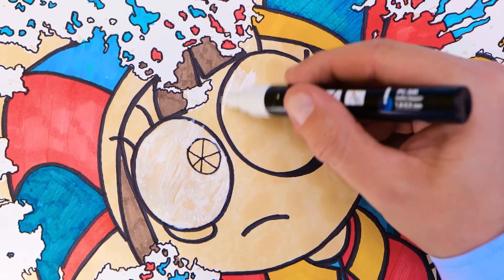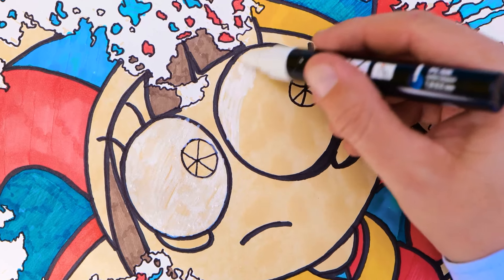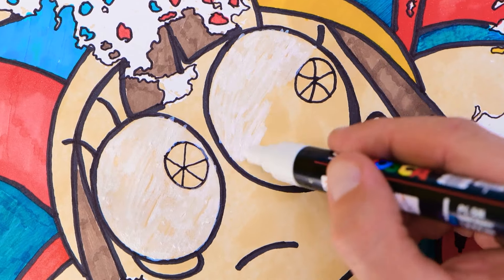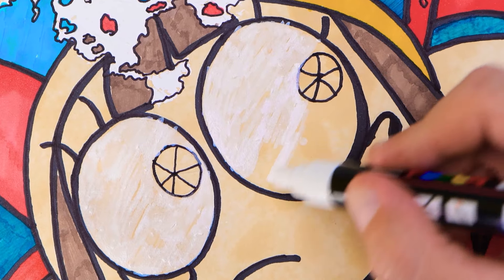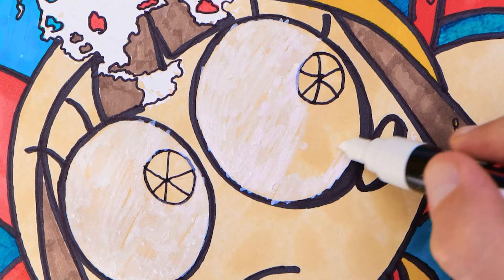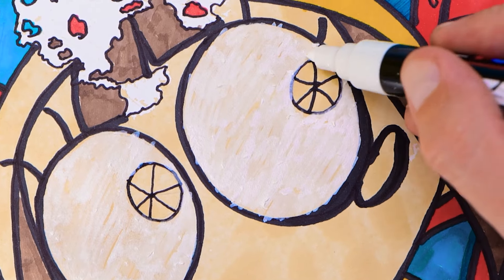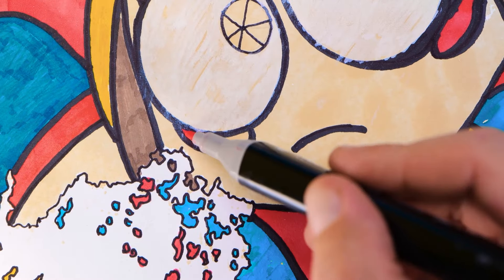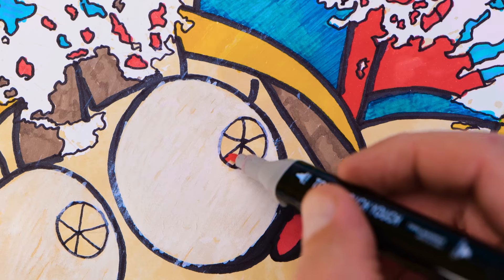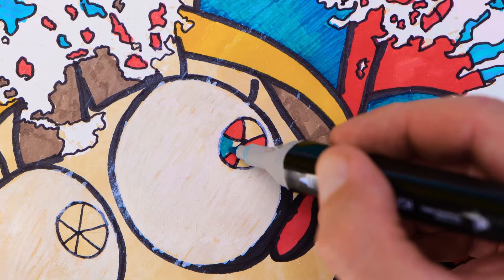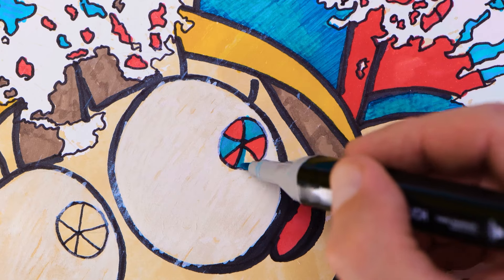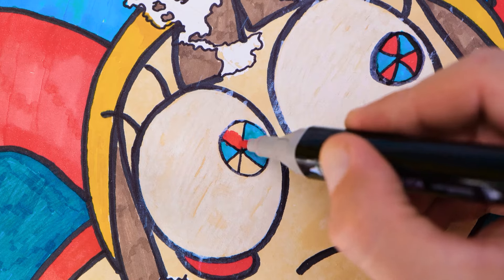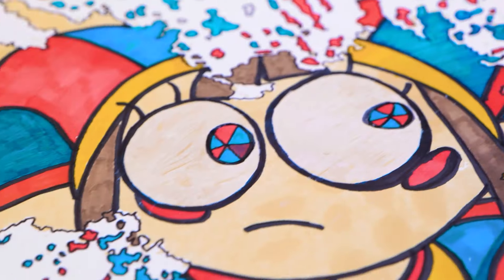And just like that, we're moving on to coloring the second eye of our friend Pomni. Just a little bit more patience, friends. We're really at the finish line here. Let's add some rosy red cheeks. And some colorful pupils, of course!